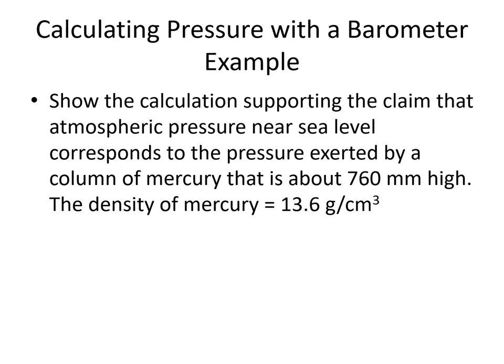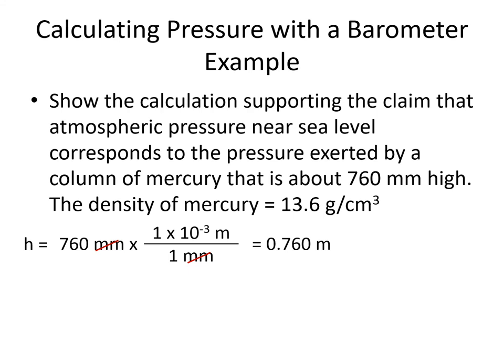Here's an example of calculating pressure with a barometer. We're trying to show that atmospheric pressure is equal to 760 millimeters of mercury, and the density of mercury is given as 13.6 grams per cubic centimeter. As we plug into our equation, h — the height of the mercury in the column — is 760 millimeters. Before plugging in, we need to convert it to meters by multiplying by 10 to the minus 3, giving us 0.760 meters.